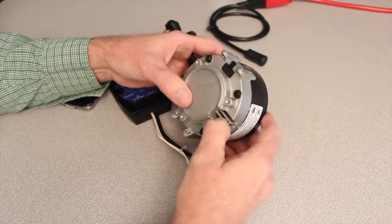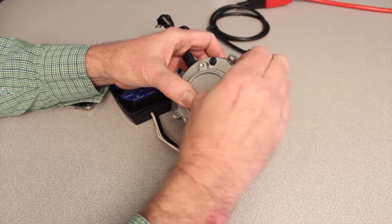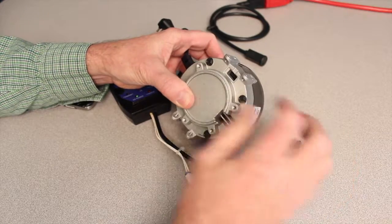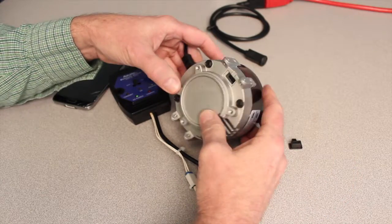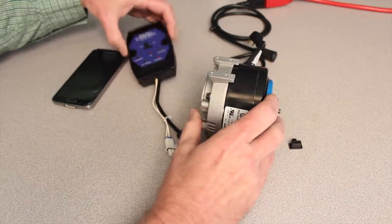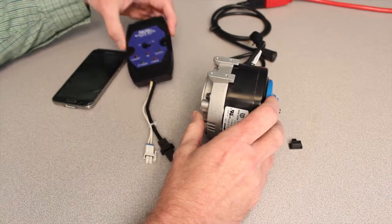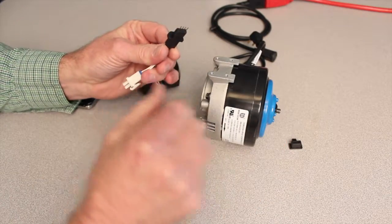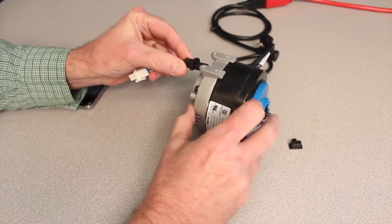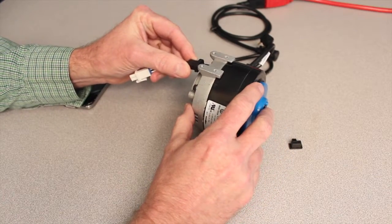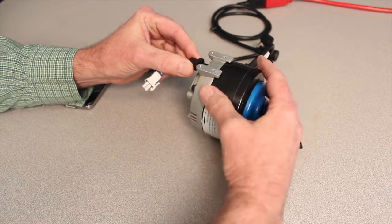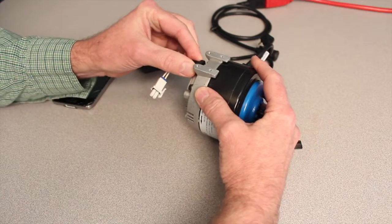The first thing you'll do is remove the rubber plug on the back of the motor to have access to the programming port. Next, take the programming module and the 4-pin plug that goes into the receptacle in the back of the motor. You want to be very careful to get this into the pin, into the socket.